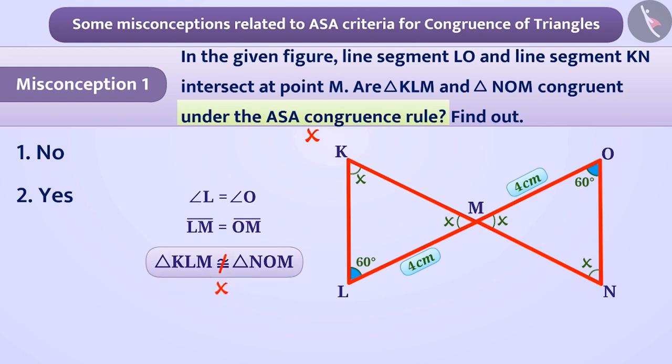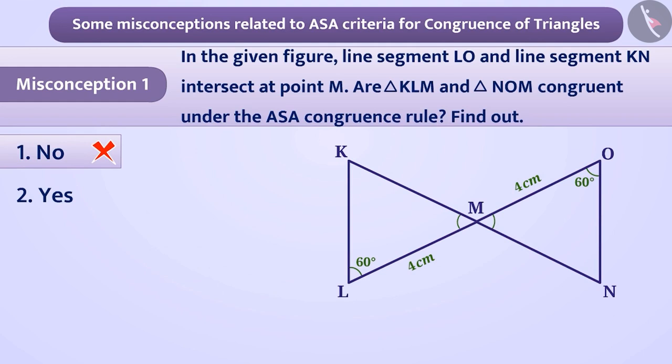But this is a wrong assumption. Therefore, option 1 is the wrong answer. Here, based on the information provided, they fail to establish a relation between the angles or sides of a triangle.